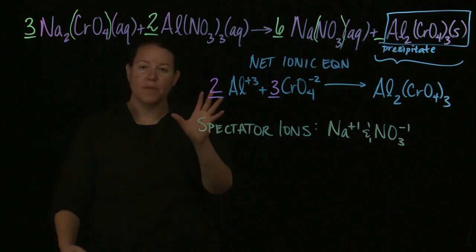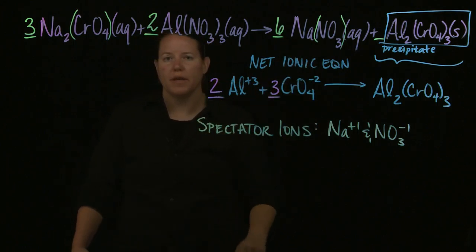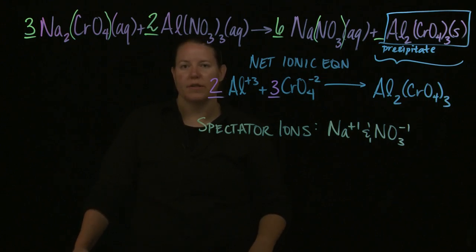So spectator ions, if you have this particular pattern in your reaction, spectator ions are given by the AQ product. Net ionic equation is given by the S, L, or G product. And that is the quick and dirty way of doing an exchange reaction, net ionic equation, and spectator ions, if you have the balanced chemical equation to begin with.